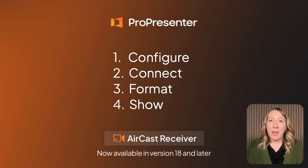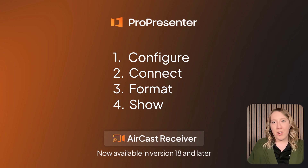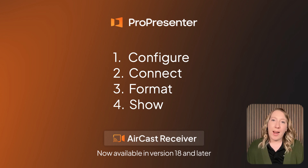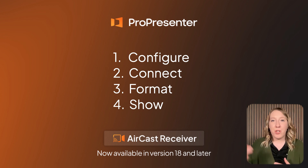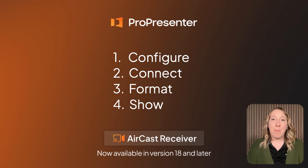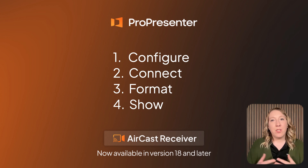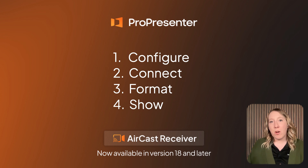So here's how this webinar is going to work. I'm going to go through four different things related to the Aircast feature. First, we're going to learn how to configure an Aircast receiver. Second, we're going to learn how to connect that receiver and connect devices to it in ProPresenter. Then we're going to learn how to format our slides as a pastor or speaker and get those to a device that can be connected to an Aircast receiver. And lastly, we're going to talk about how to show that in ProPresenter, both a simple way and some more advanced ways.